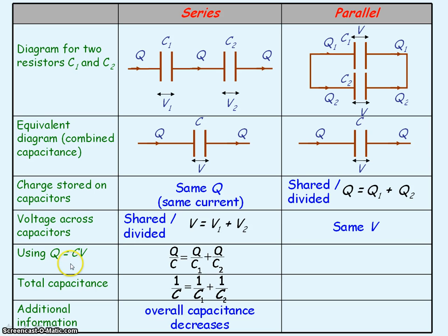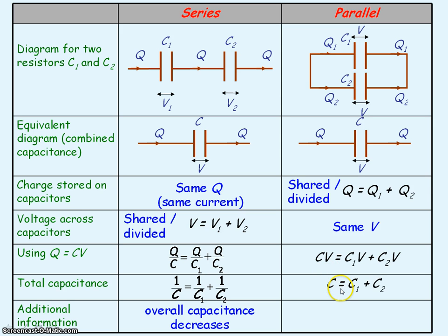We're now going to use the equation Q equals CV, rearranged so that Q equals C times V, Q1 equals C1 times V, and Q2 equals C2 times V. In parallel, voltage is the same, so we can cancel out the voltage as it's common throughout, meaning our total capacitance is equal to C1 plus C2. So in parallel, the overall capacitance increases, meaning more charge is going to be stored overall.